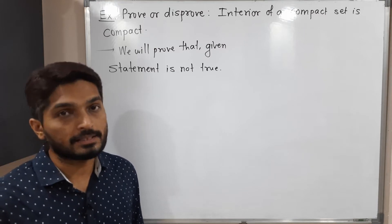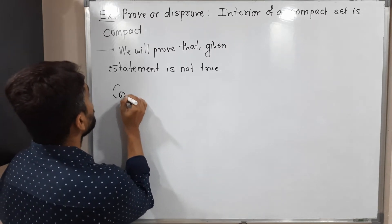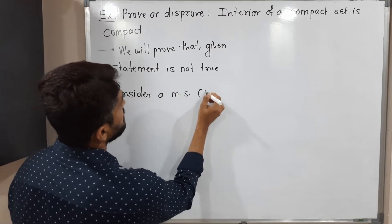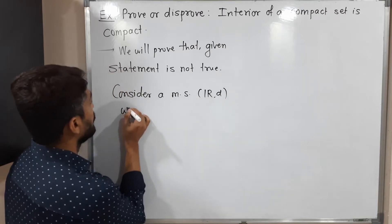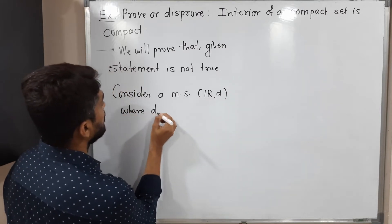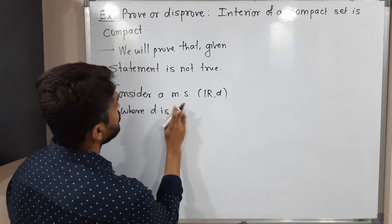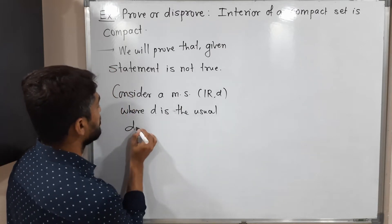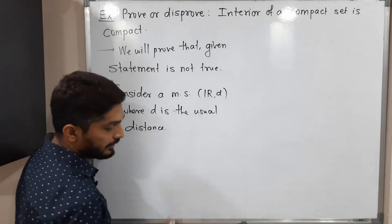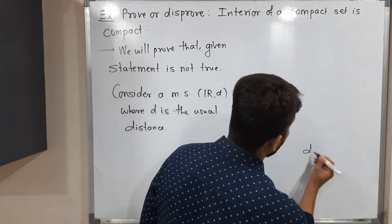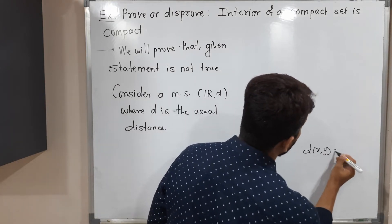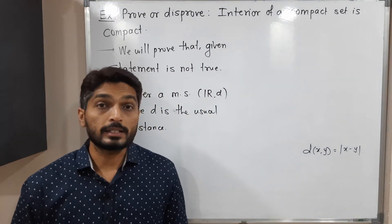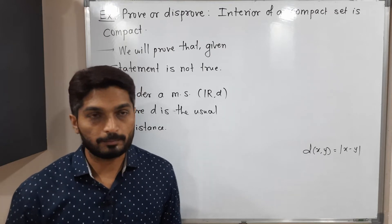Let us consider one metric space R with the usual distance d, where d(x, y) is defined as |x - y|. That means our regular distance. So we have the usual distance on R.